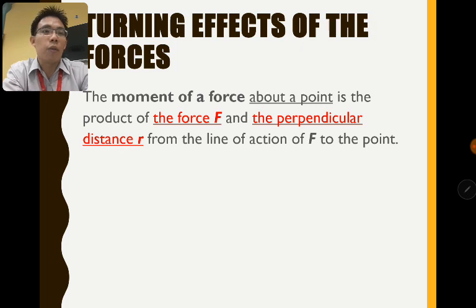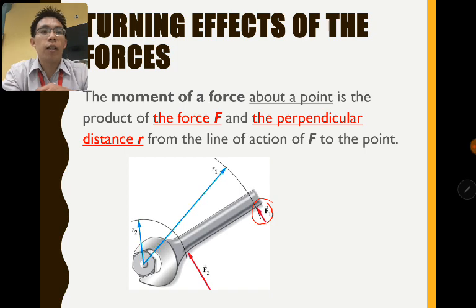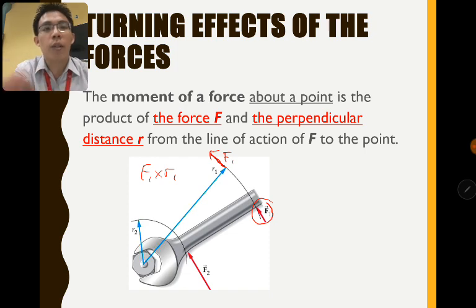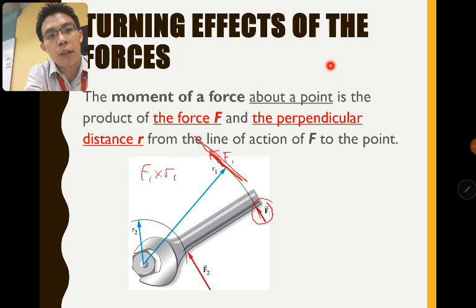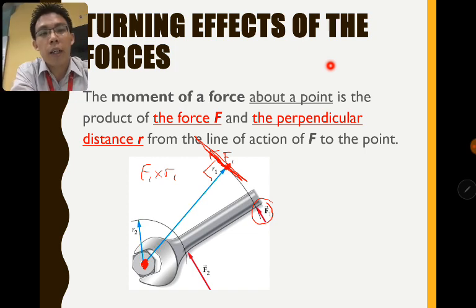The moment of a force about a point is the product of the force and the perpendicular distance from the line of action of the force to the point. You may have learned this at O-level or SPM already. For example, if you apply a force F1, the moment produced by F1 will be F1 times r1, where r1 is the perpendicular distance from the line of action of the force to the point of moment.